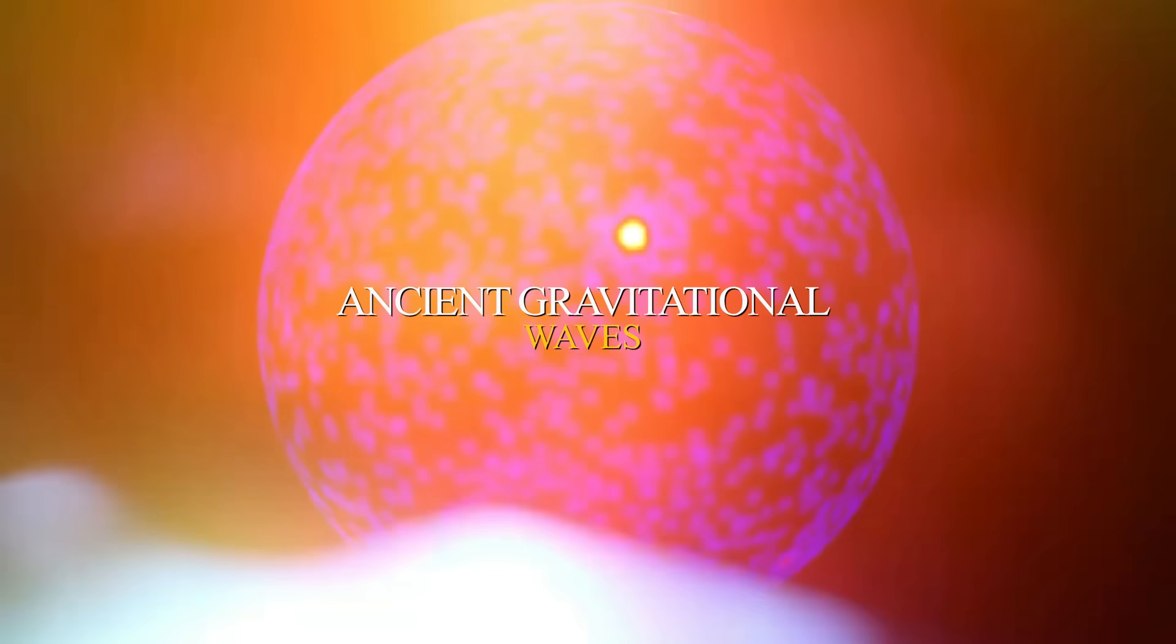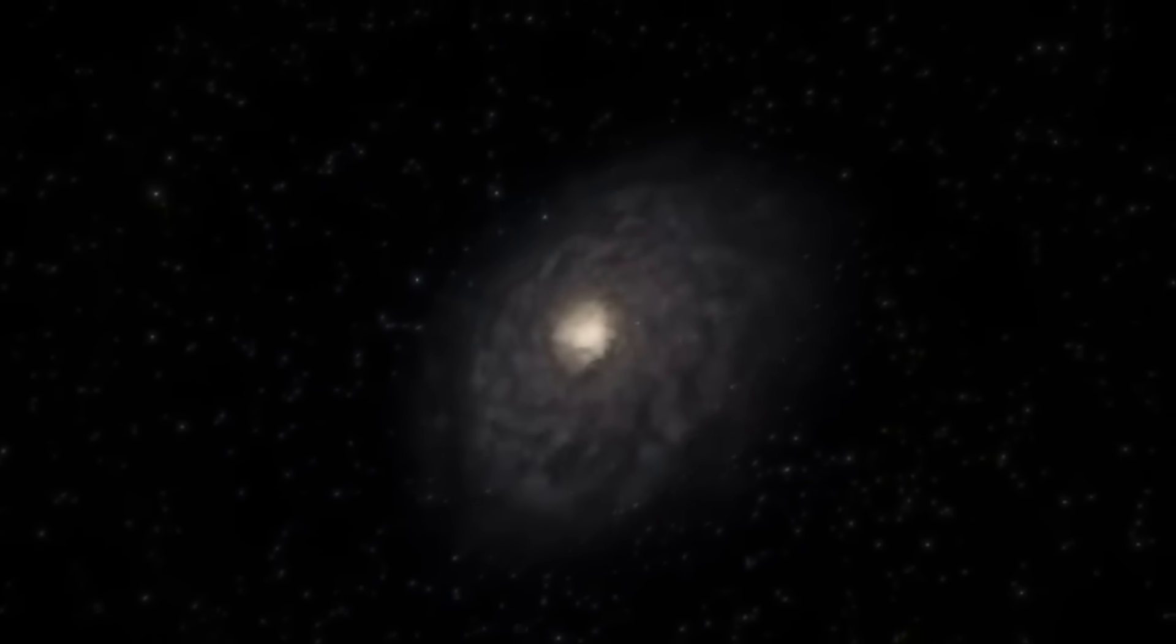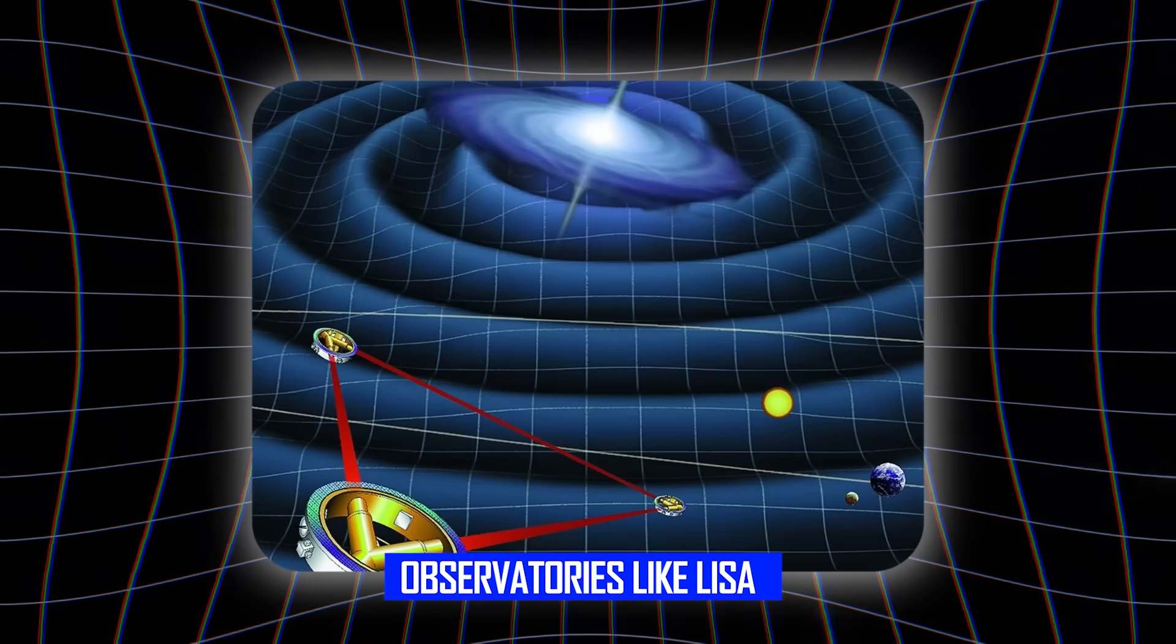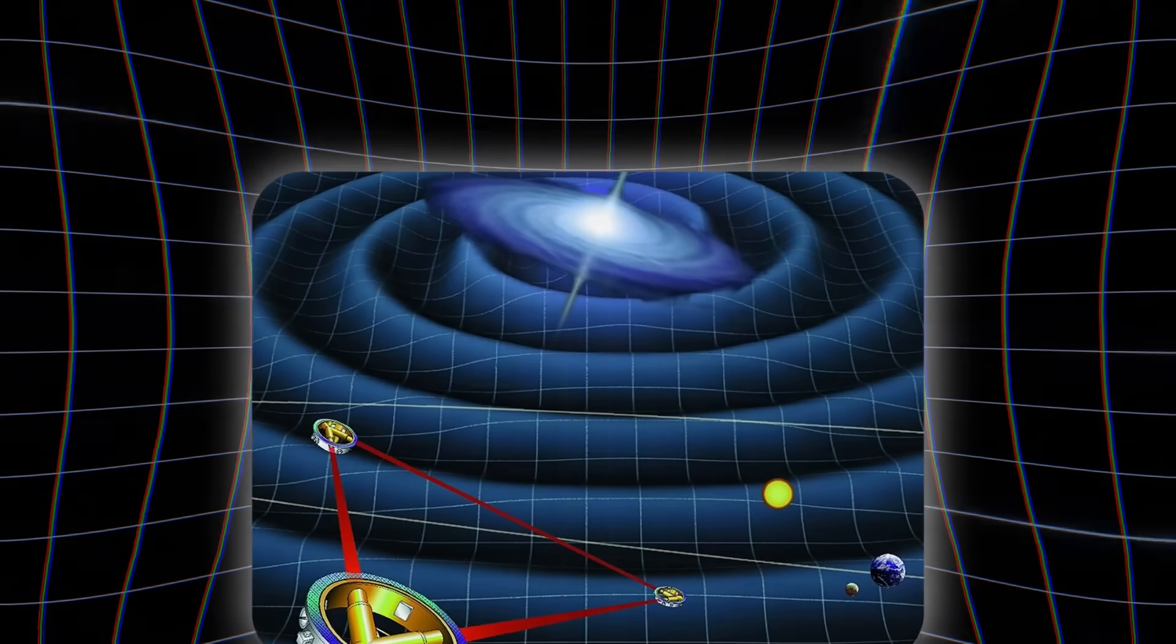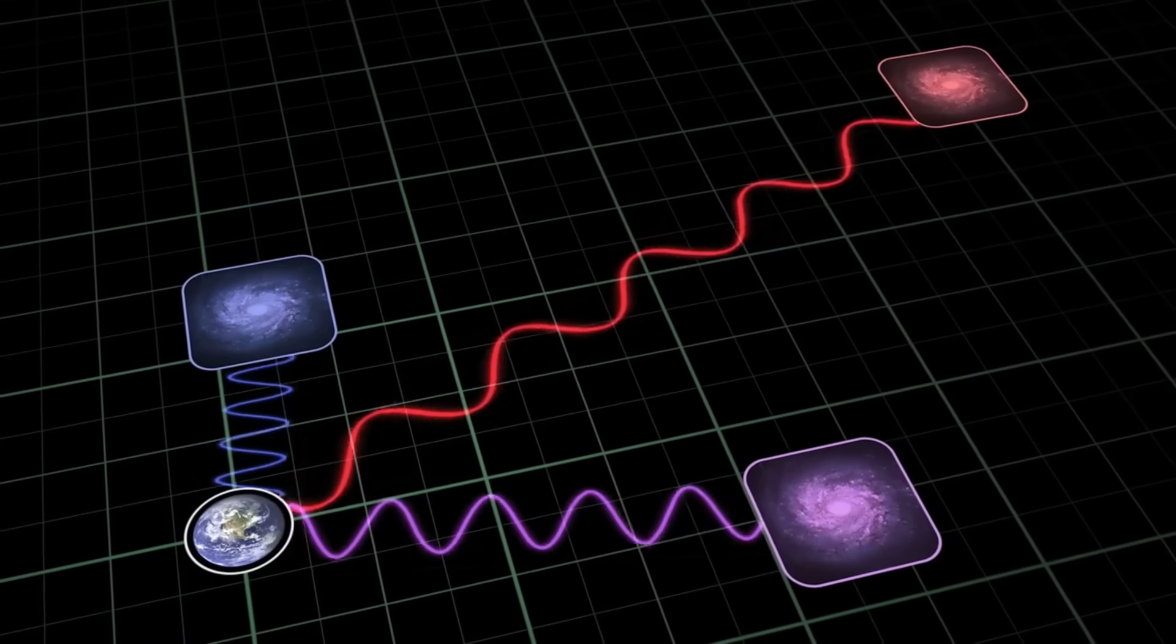And there's more. Ancient gravitational waves from the first fraction of a second after the Big Bang may leave echoes we haven't detected yet. Future observatories like LISA could potentially pick up these primordial ripples, giving us a glimpse beyond even the CMB.